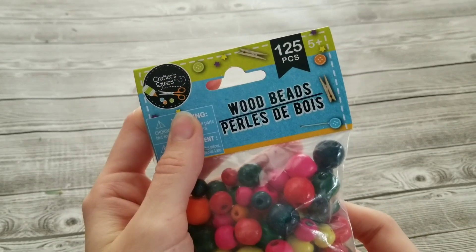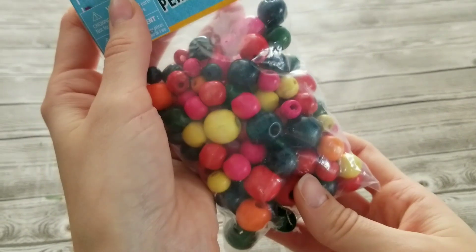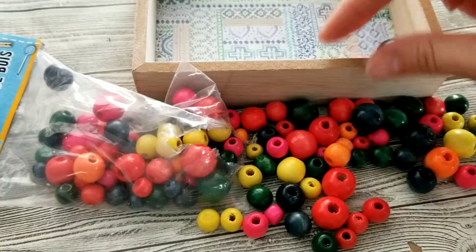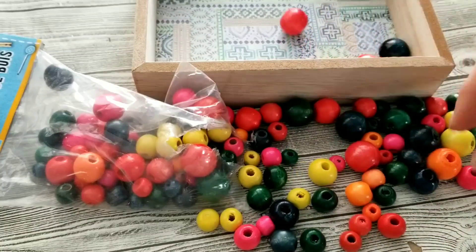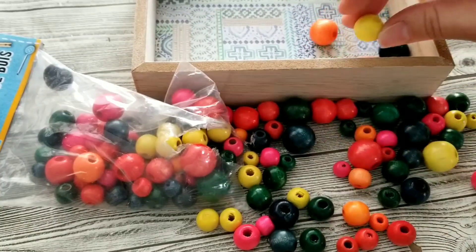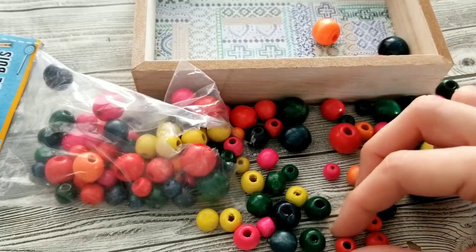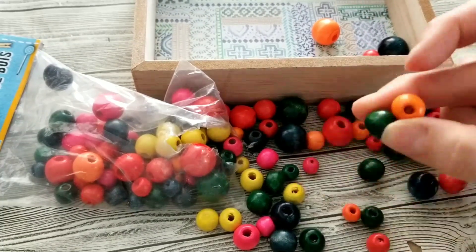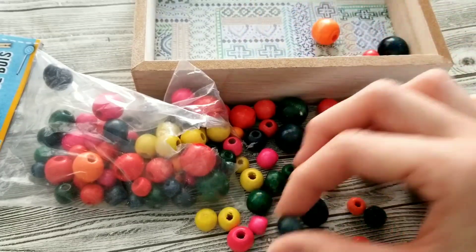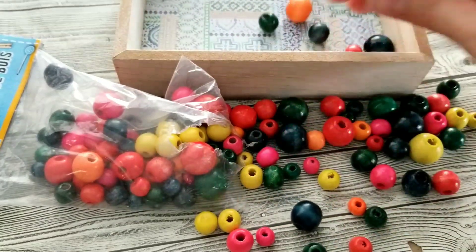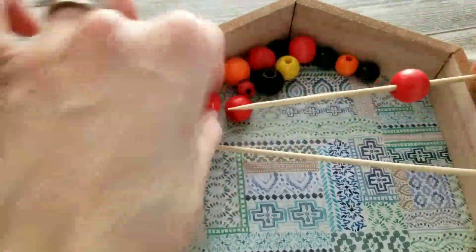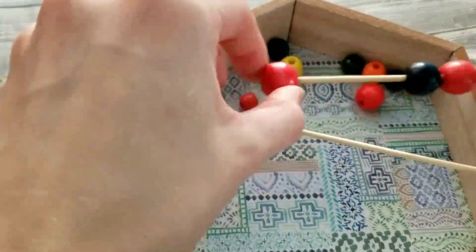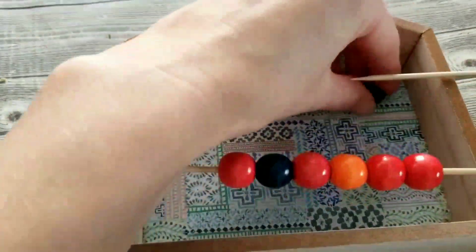I'll be using these wooden beads for the heads to my people and animals. So first off, I'm going to go through and pull out all of the different sizes that I need. I used six of the largest beads for Joseph, the Two Shepherds, and the Three Wise Men. And then the next smallest bead, I used two. One for Mary, one for the angel. The next smallest bead, I used four for my four animals. And then I had one of the smallest beads for baby Jesus.